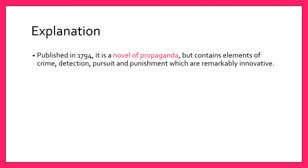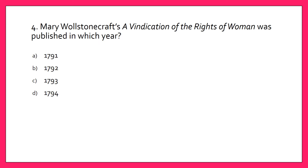Mary Wollstonecraft's A Vindication of the Rights of Women was published in which year? A. 1791, B. 1792, C. 1793, or D. 1794? The answer is B. 1792.